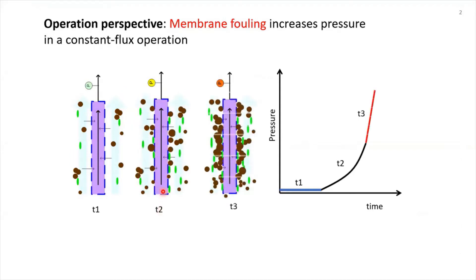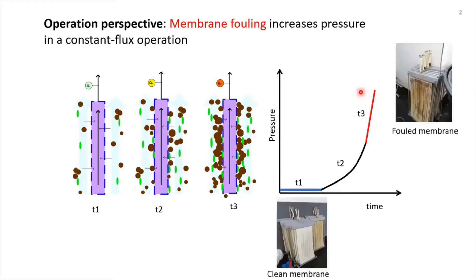Normally at this time you have to stop the operation and perform the cleanings. This is an example of the real MBR membranes. You can imagine this is the condition when you start the operation and at the end of this cycle, you will have a fouled membrane. After this condition is attained, the operation must be stopped and the system must be cleaned and then operation must be restarted again.